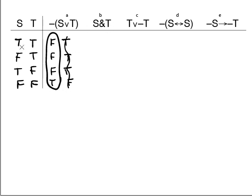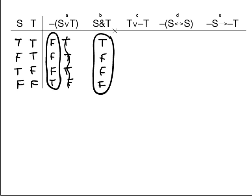S ampersand T. Ampersand is true only when both parts are true. True and true gives true; false and true gives false; true and false gives false; false and false gives false. That's the only connective, so that is the main connective — let's circle it.